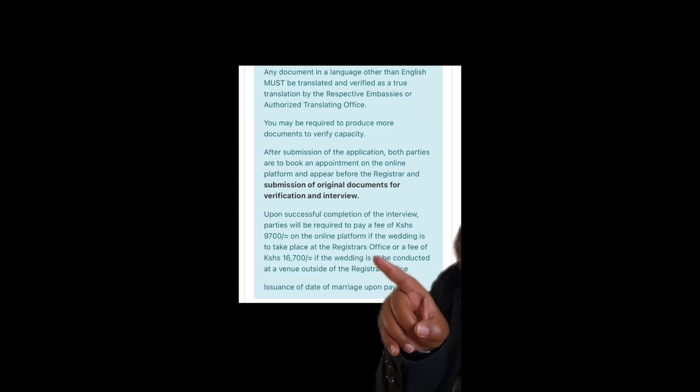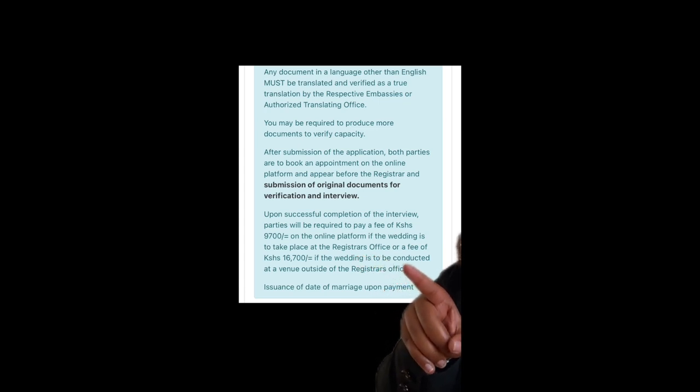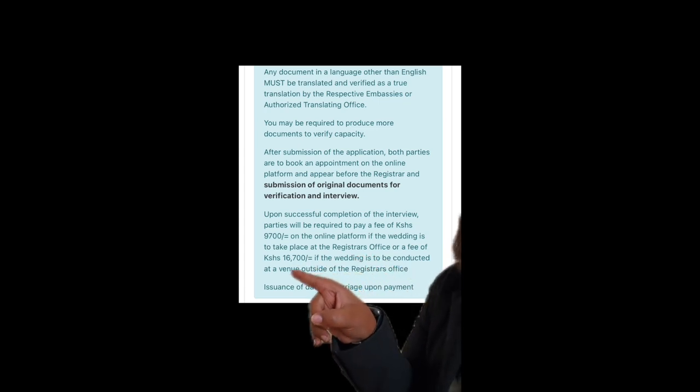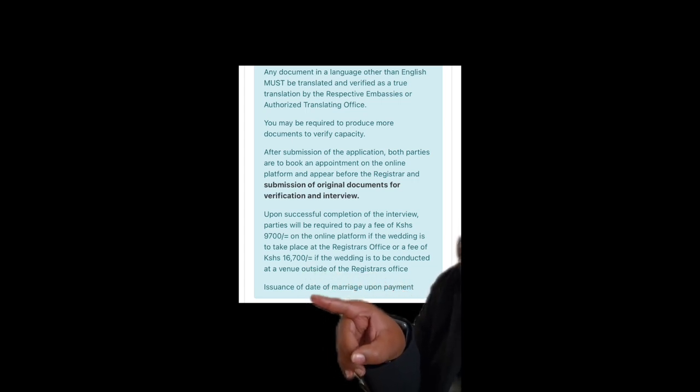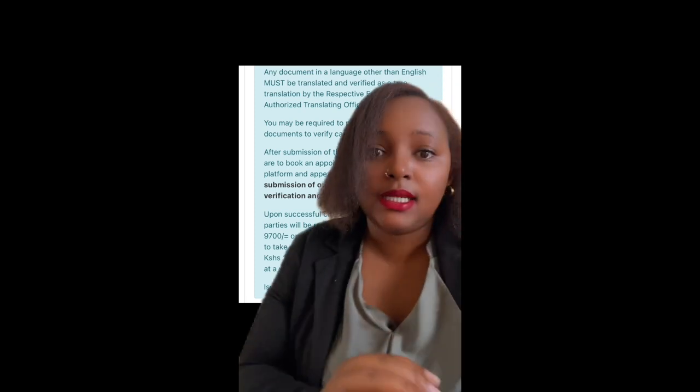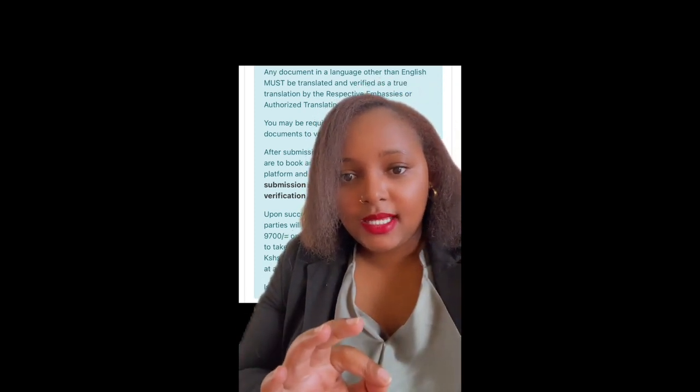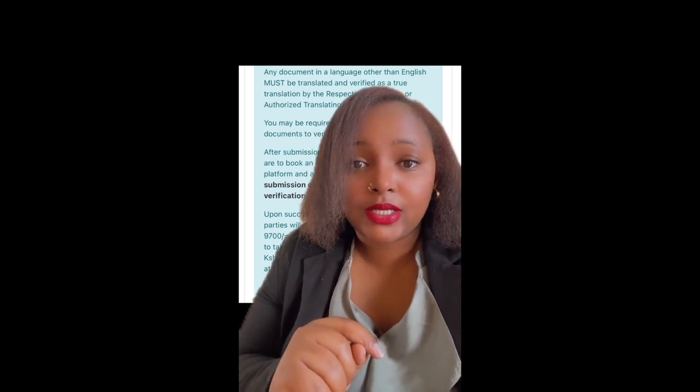Upon successful completion of the interviews, parties will be required to pay a fee of 9,700 KES on the online platform if the wedding is to take place at the registrar's office, or a fee of 16,700 KES if the wedding is to be conducted at a venue outside. Issuance of the date of marriage is upon payment. For more information, go on e-citizen and contact the Office of the AG if you have any more questions.